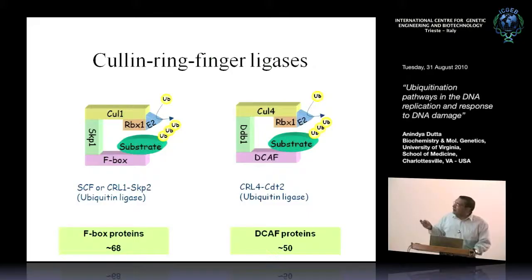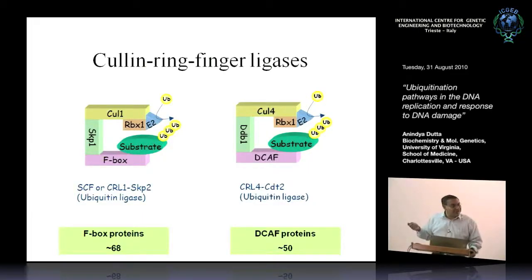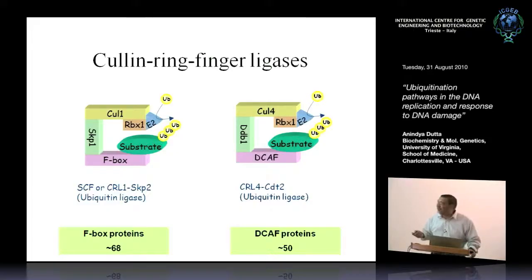The CUL4 complex is anatomically almost similar to CUL1. The bridging protein is DDB1, and the substrate recognition protein is called DCAFs — usually WD40-containing proteins that bind the substrate. The same RBX1-E2 part is present. The DCAF we'll be focusing on is CDT2 — so keep CDT1 the substrate and CDT2 the DCAF separate. The F-box protein important for the CDT1 story is SKP2.